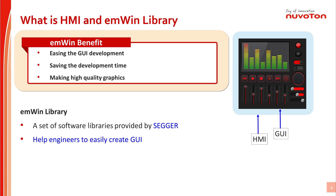The emWin library is a set of software tools, APIs, and libraries provided by Segger. The emWin library could help engineers to easily create GUI, save development time, and improve the quality of GUI.